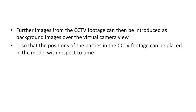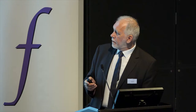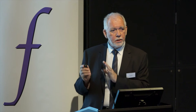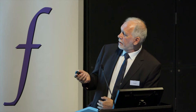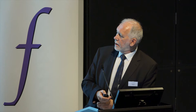Further images from the CCTV footage can then be introduced as background images over the virtual camera view. This enables the position of the parties at various points in time to be placed within the 3D model. In this particular image, the Renault and the pedestrian are at 14:53:21, frame 10. It's now possible to place 3D models of the vehicle, the pedestrian, and the shopping trolley to replicate their positions at that point in time within the 3D model.